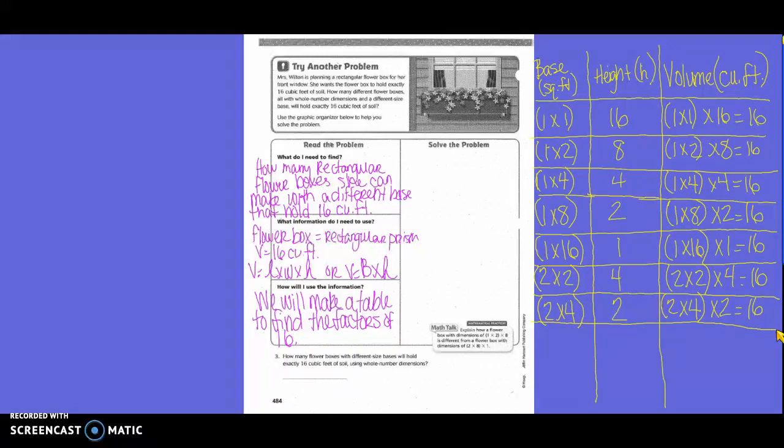Can I do another 2? Yes. We already did 4. Can I do 5? No. 6? No. 7? No. 8? Yes. So 2 times 8. 2 times 8 is what, guys? 16. So what would be my height? 1. So 2 times 8 times 1 equals 16.